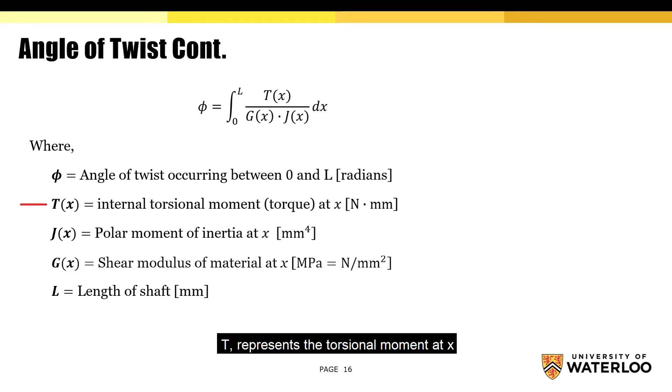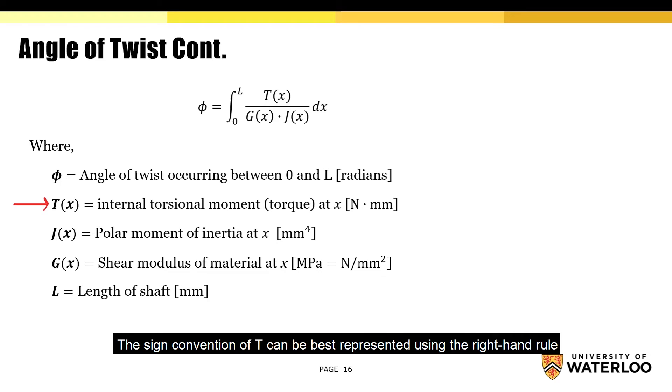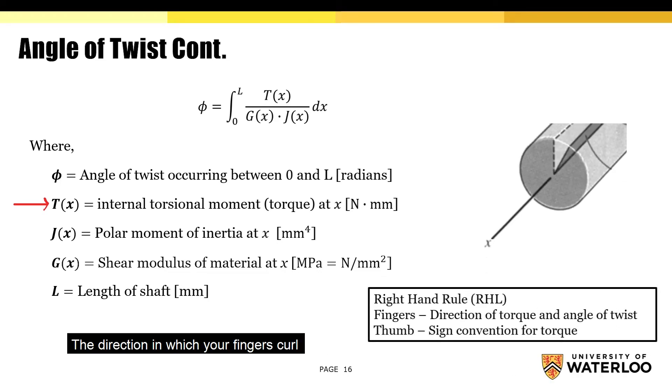T represents the torsional moment at x. The unit for T is newton times millimeters. The sign convention of T can be best represented using the right-hand rule. The direction in which your fingers curl represents the direction in which phi occurs, whereas your thumb will be used to determine the sign convention for the corresponding torsional moment.